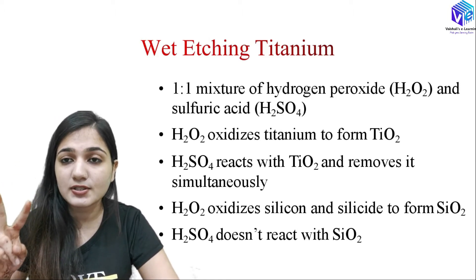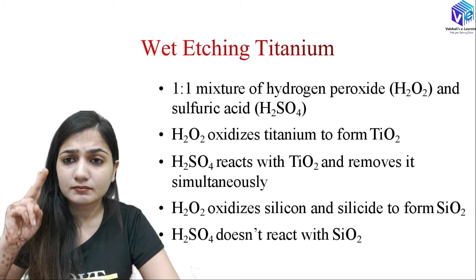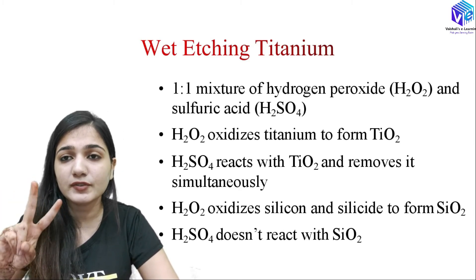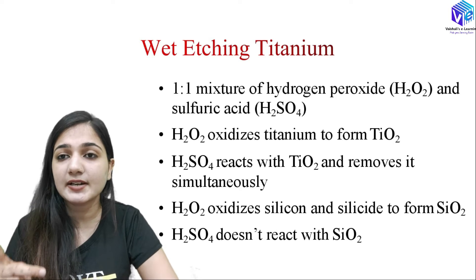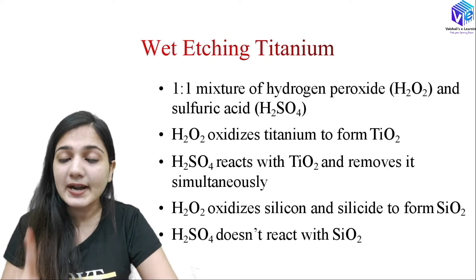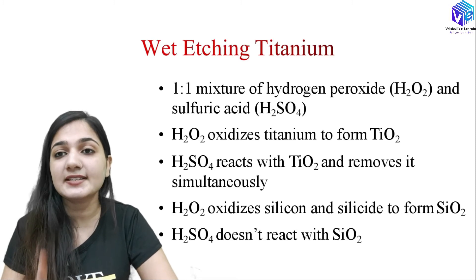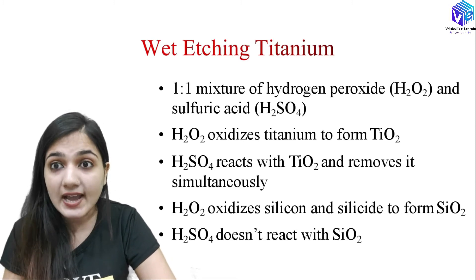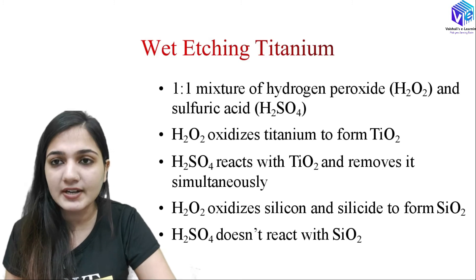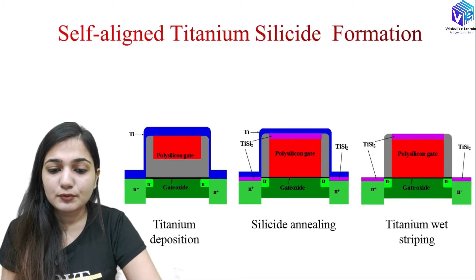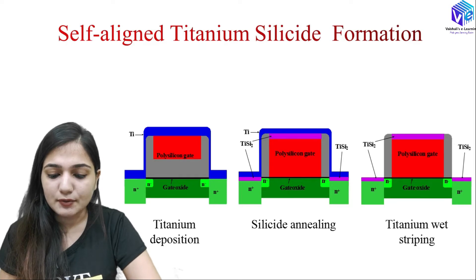So if I have both silicon and silicon dioxide as well as a titanium layer and I want to remove both the titanium and silicon dioxide layers, I cannot use this process. But if I want to keep the silicon dioxide intact, then this process is highly selective — which is a very good advantage.